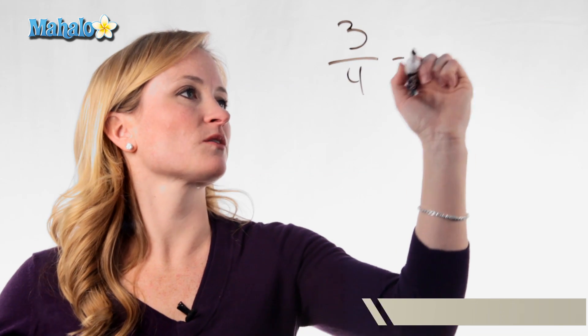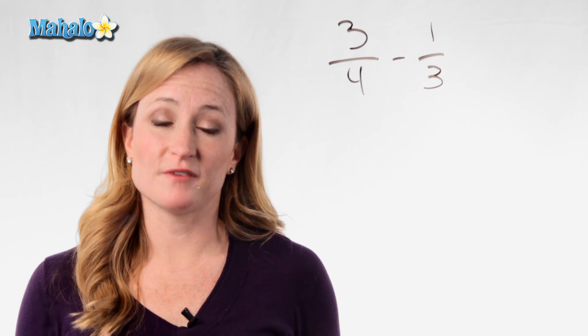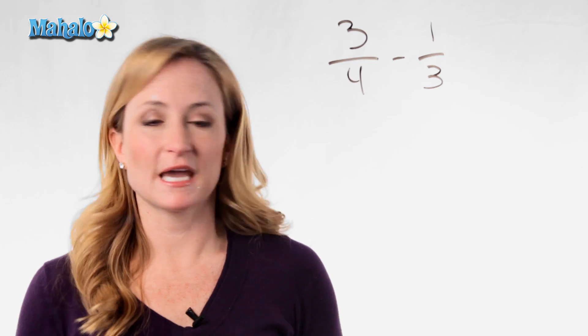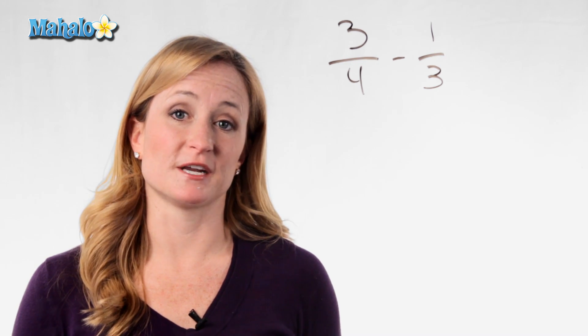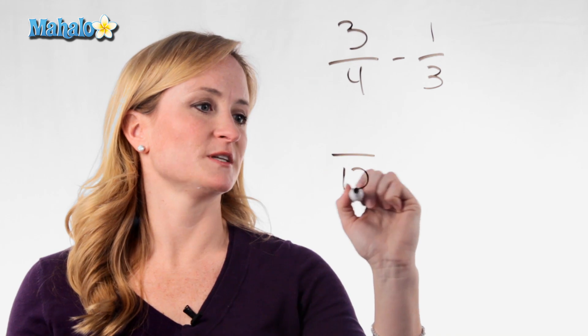Start with a simple problem like 3 fourths minus 1 third. The rule of adding and subtracting fractions is you can't add or subtract them unless you have a common denominator. So you need to first find your common denominator, which in this case would be 12.